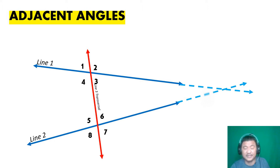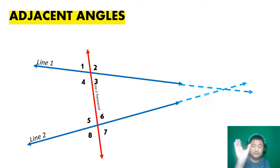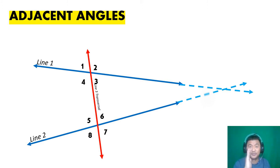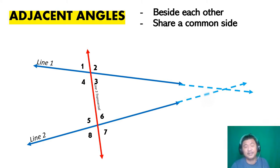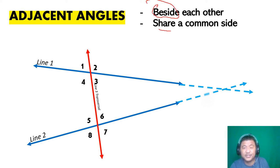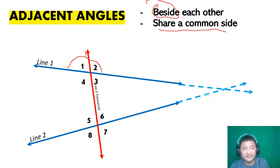Next are adjacent angles. Think of adjacent like this — if this is your apartment, beside your apartment is another apartment, and sometimes you're sharing a common wall. Adjacent angles are beside each other and they share a common side. If you look at angle one, who's beside angle one? Angle two. They are beside each other and they're sharing this common side.